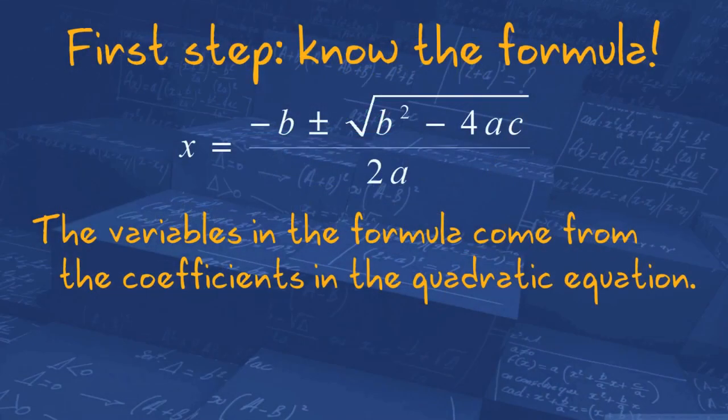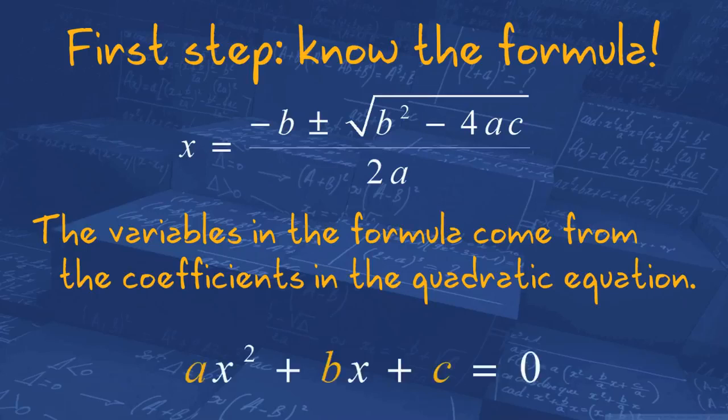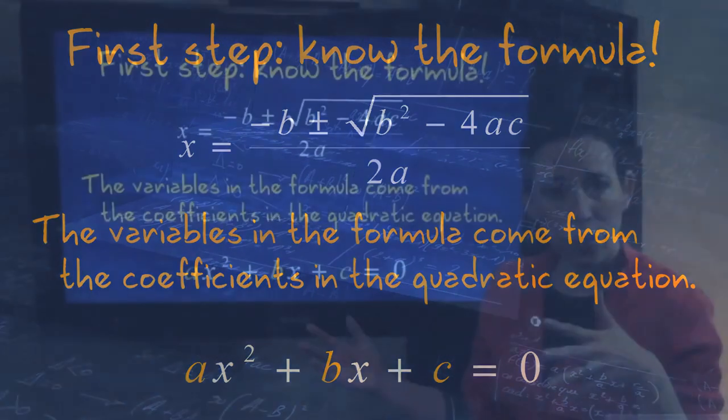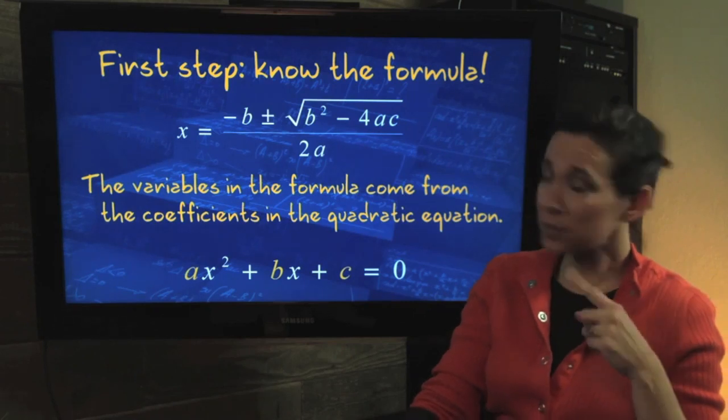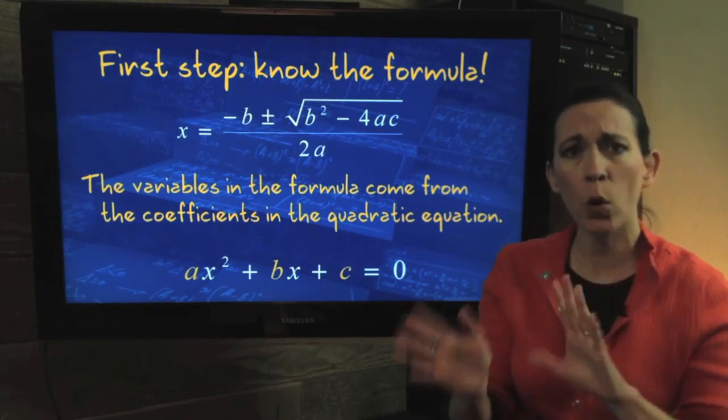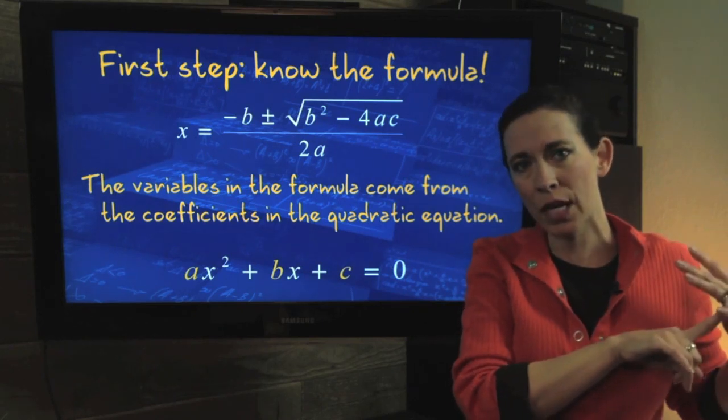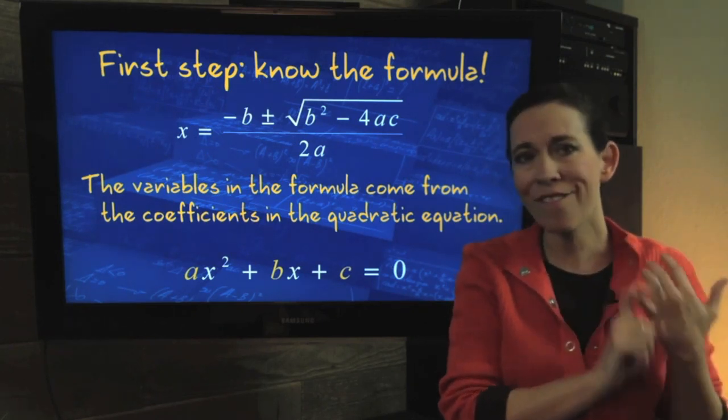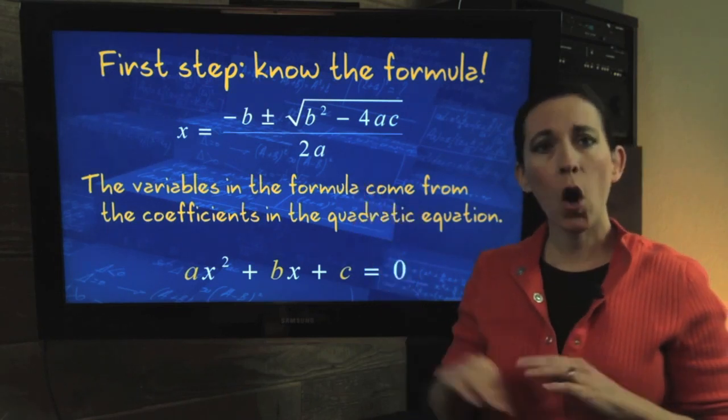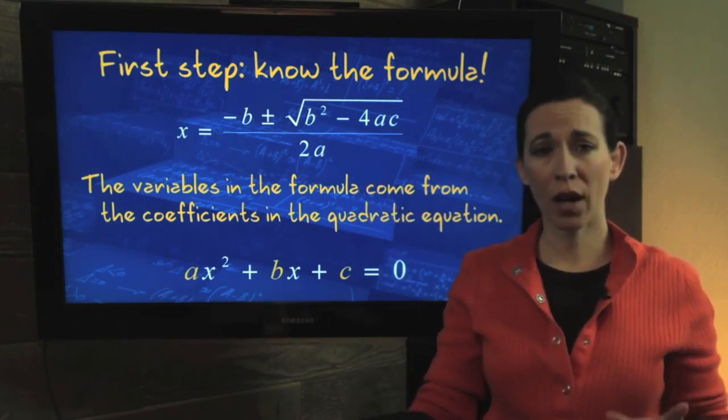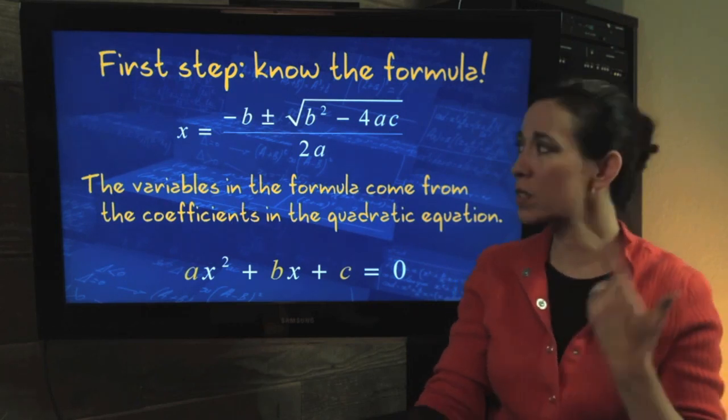So you've got to know the formula. Now, where do all of those little variables, the a, b's, and c's come from? The variables in the formula come from the coefficients in the quadratic equation. So if you have the quadratic equation set equal to zero, and it's in proper format, descending powers, x squared, x, constant, all of the numbers here are your a, b, and c in alphabetical order. Pretty cool, huh? Now, the nice thing about the quadratic formula, I know we've already learned how to solve quadratics using factoring, but sometimes those polynomials aren't factorable. The quadratic formula always works. It doesn't matter if it's factorable or not.